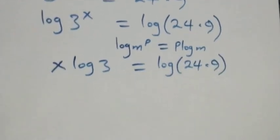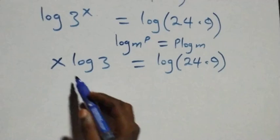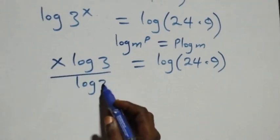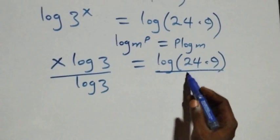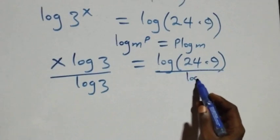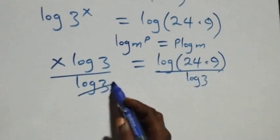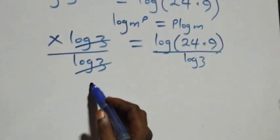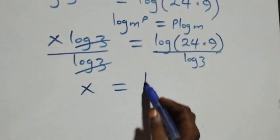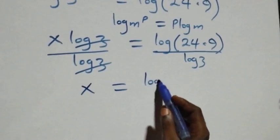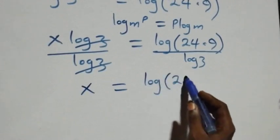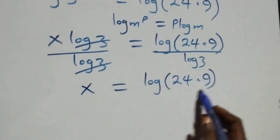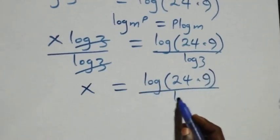The next step: we divide both sides by log three — divide this side by log three and also divide this side by log three. Here log three cancels each other, and we have x left, which equals log of twenty-four times nine over log three.